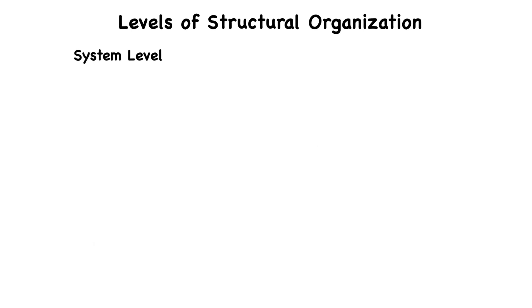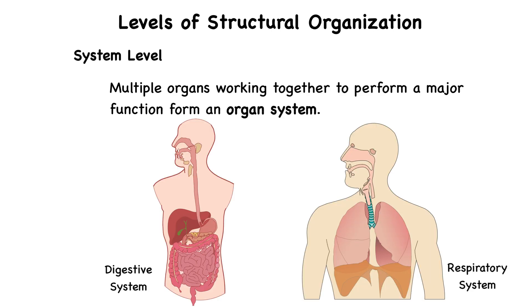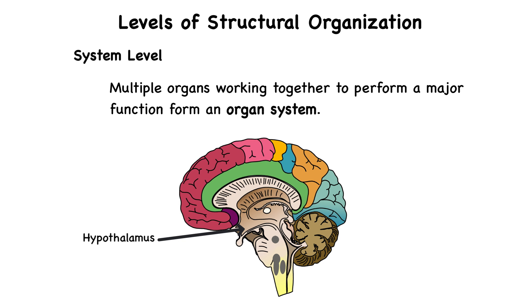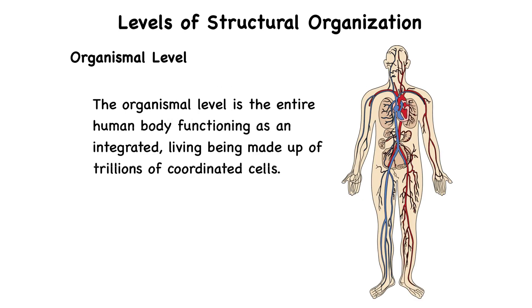When multiple organs work together to perform a major function, they form an organ system. Each system is a team of specialized organs collaborating to carry out vital tasks that keep the body functioning. For example, the digestive system includes the mouth, stomach, intestines, and more, working together to break down food, absorb nutrients, and eliminate waste. The respiratory system, made up of the lungs, trachea, and diaphragm, allows for the exchange of oxygen and carbon dioxide so your cells can perform cellular respiration. Sometimes an organ is part of more than one system — for example, the hypothalamus is part of the nervous system where it processes signals from the brain, but it also plays a critical role in the endocrine system by regulating hormone release through its control of the pituitary gland. The final level, the organismal level, is the entire human body functioning as an integrated living being made up of trillions of coordinated cells.